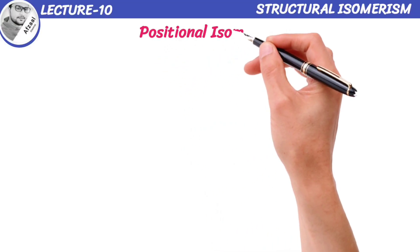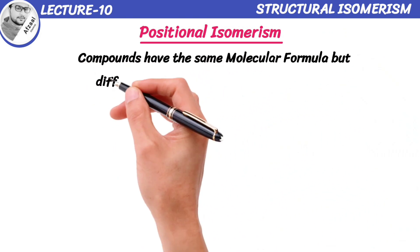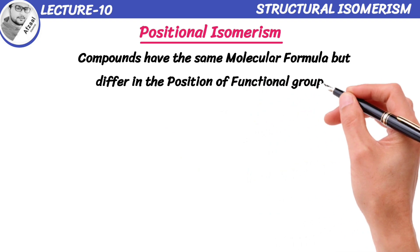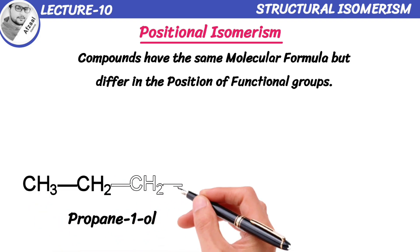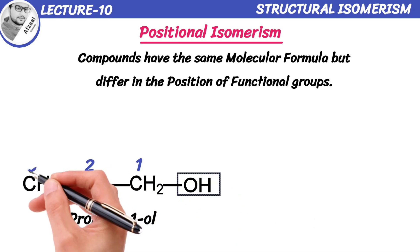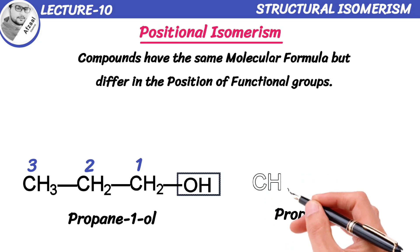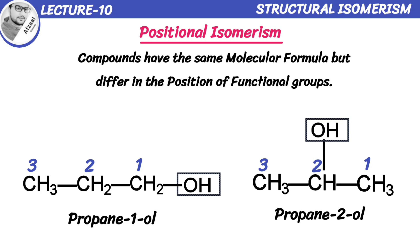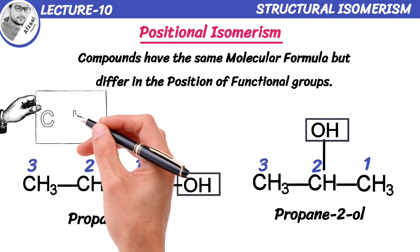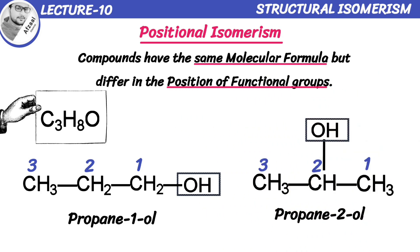Now, what is positional isomerism? It's when compounds have the same molecular formula but differ in the position of functional groups. Let's take an example. Propan-1-ol is a 3-carbon chain with an alcohol group attached to the first carbon atom. On the other hand, propan-2-ol also has 3 carbons, but this time the alcohol group is attached to the second carbon atom. These two compounds have the same molecular formula but their functional groups are positioned differently, so these are positional isomers of alcohols.